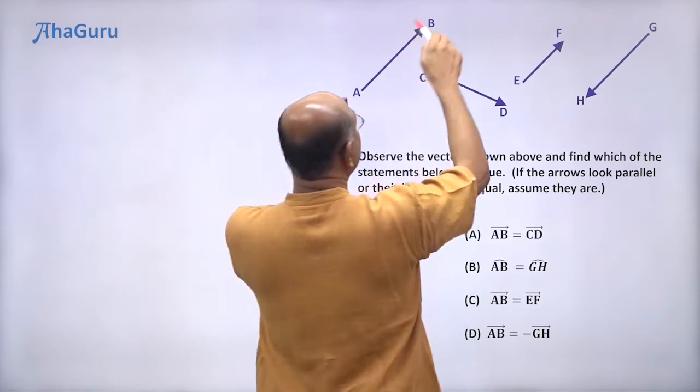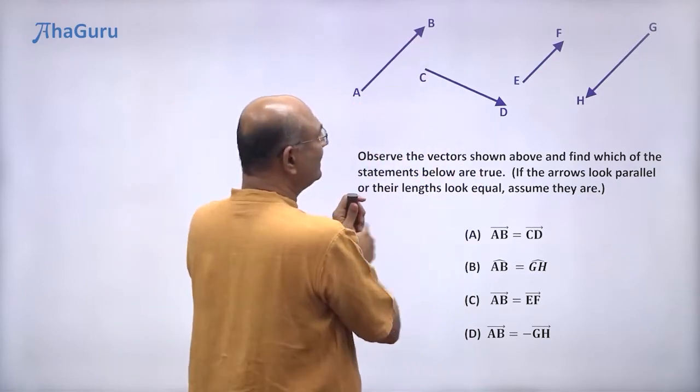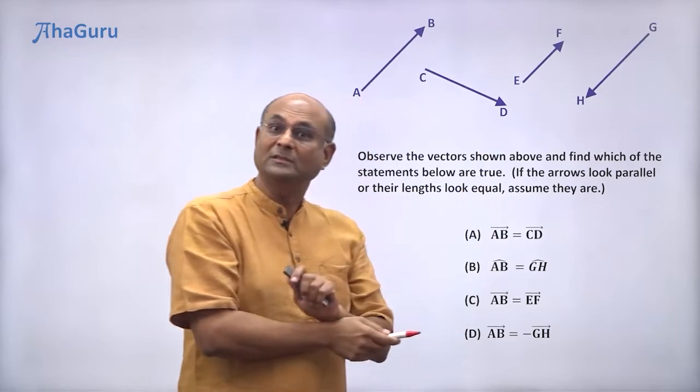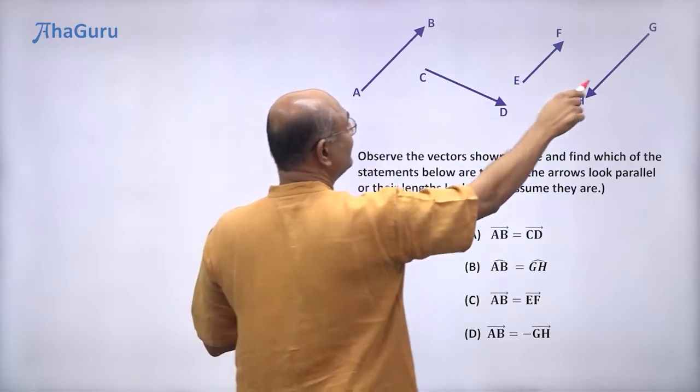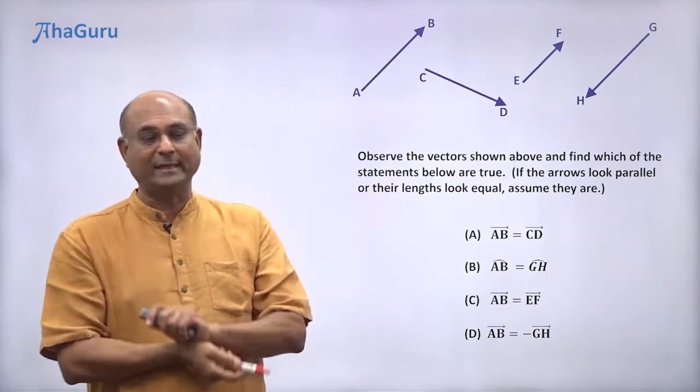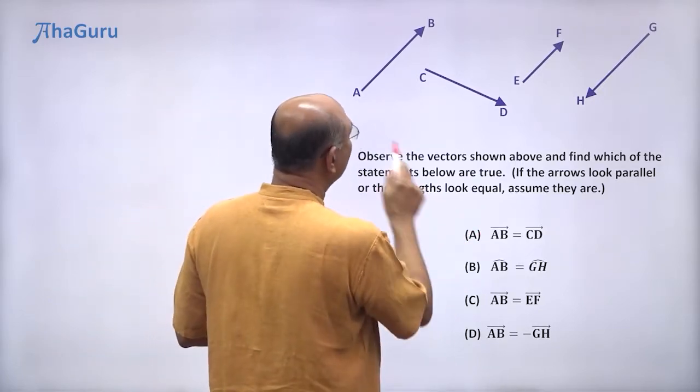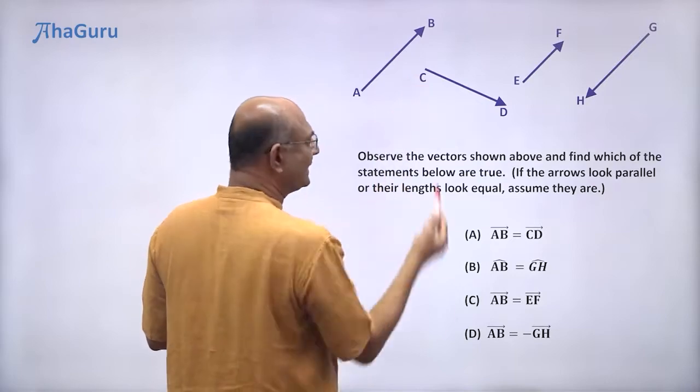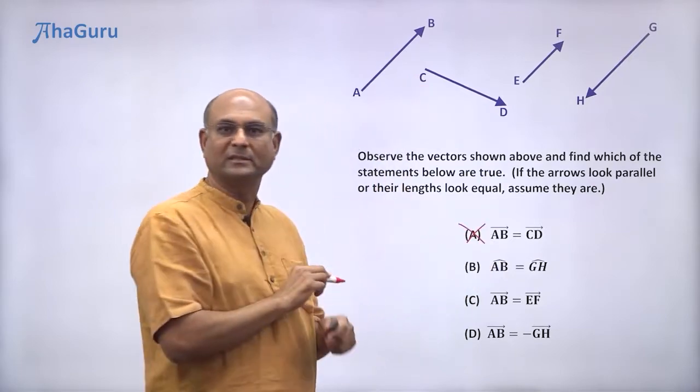You can see that AB's length looks equal to CD and it looks equal to GH. So these three have the same length, but AB and EF clearly don't have the same length. So is AB vector equal to CD vector? No, clearly the directions are different. So this is not correct.